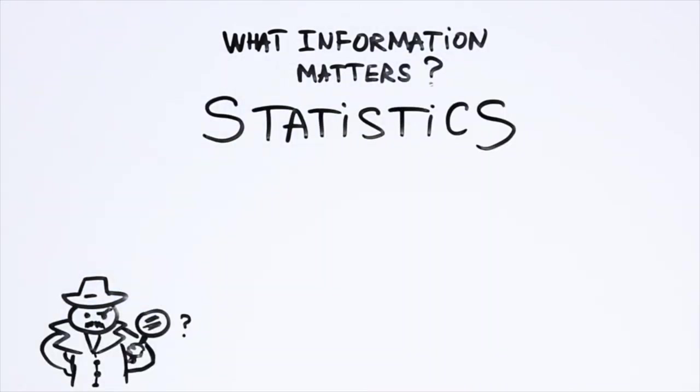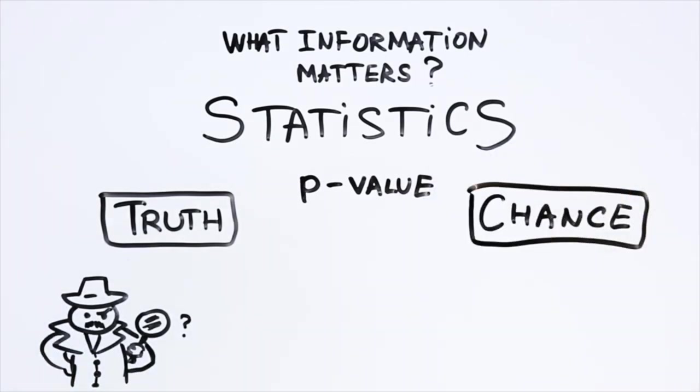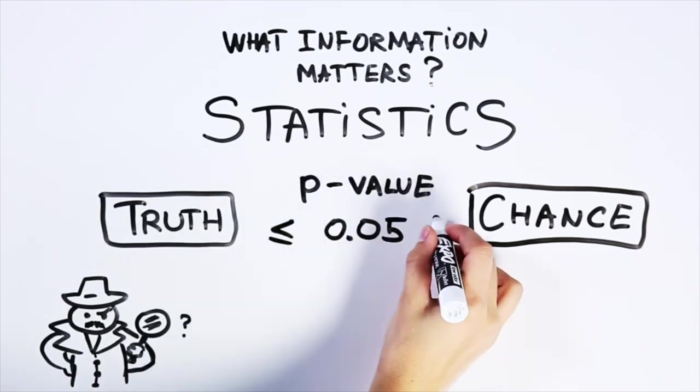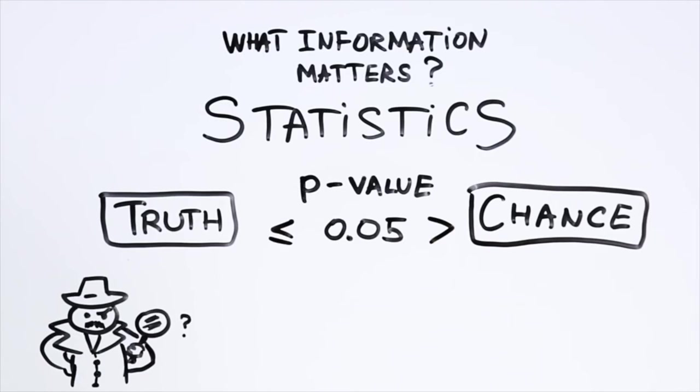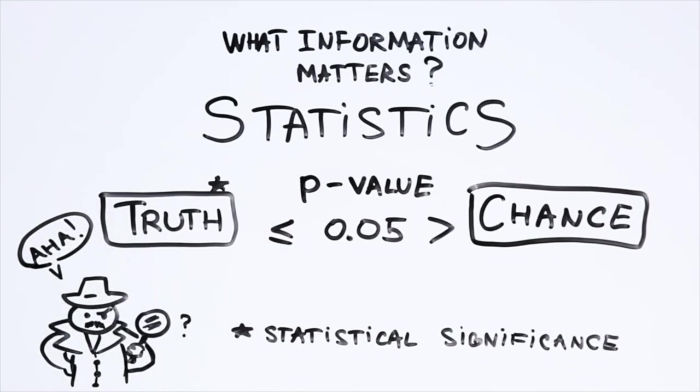One standard practice in analyzing data is to look at the probability or p-value to determine if the findings are likely to be true or are simply due to chance. The lower the p-value, the more likely it is that the results of the study represent reality and did not just happen because of chance or random variations. Usually, epidemiologists consider a p-value of 0.05 or lower as indicating that the study results are statistically significant, which is just a fancy way of saying that there's less than 5% chance of these results being due to random variations.